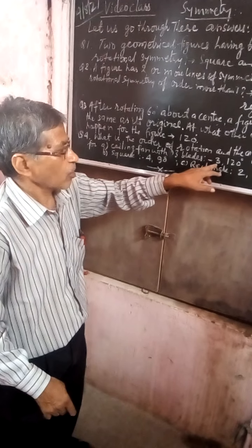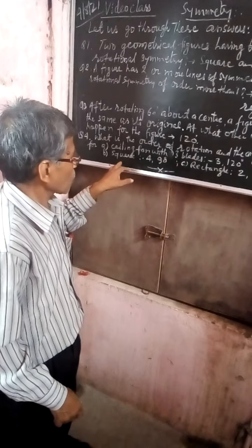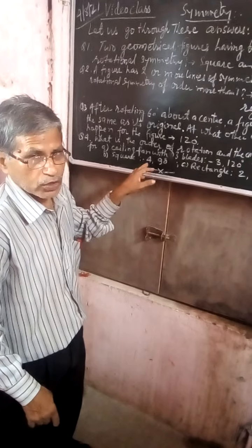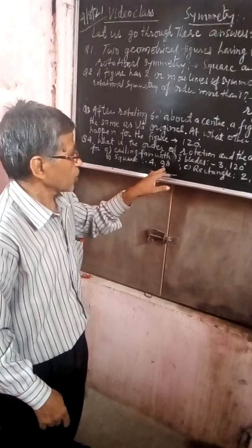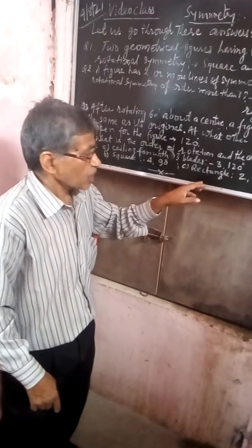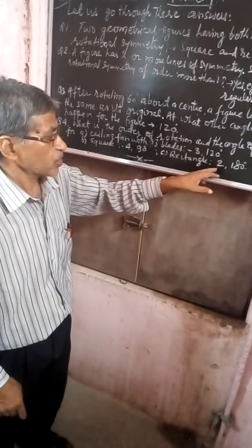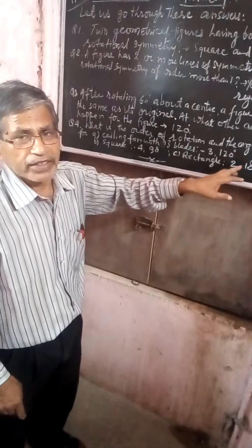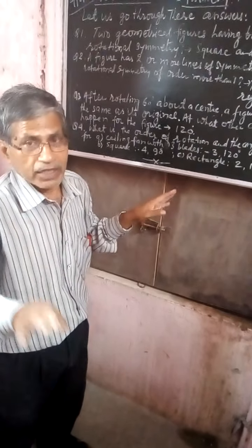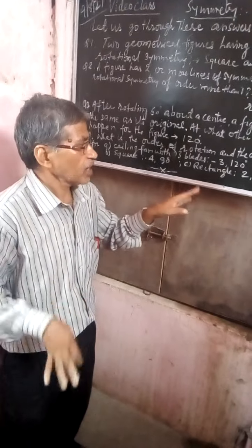Next, a square — for a square, order of rotation is four and the angle of rotation is 90 degrees. And a rectangle — for a rectangle, order of rotation is two and the angle of rotation is 180 degrees. That's all for today, thank you and have a nice day.